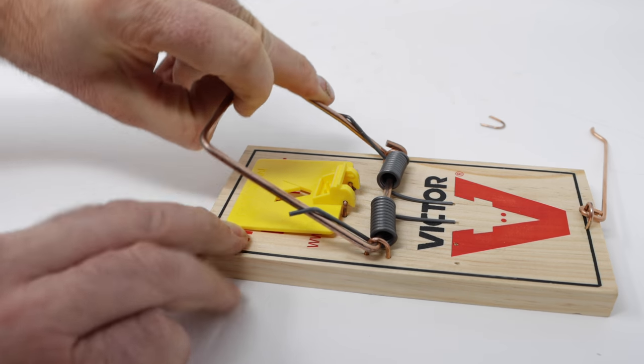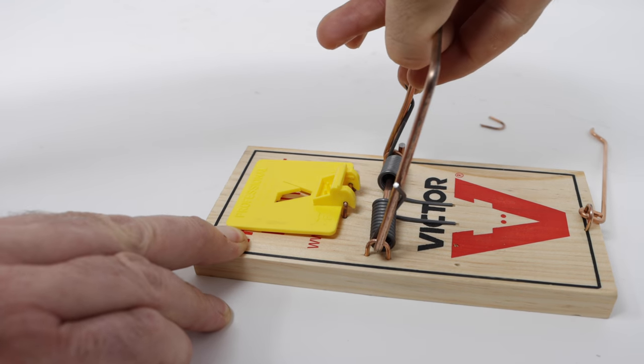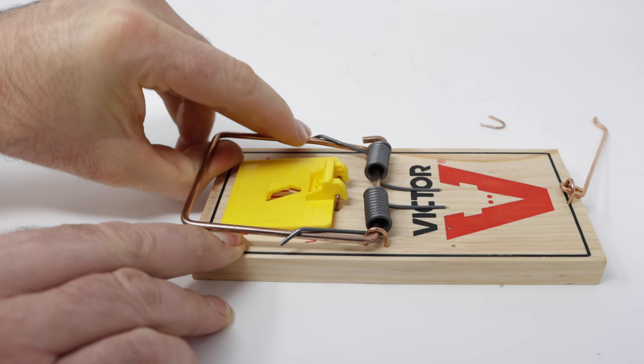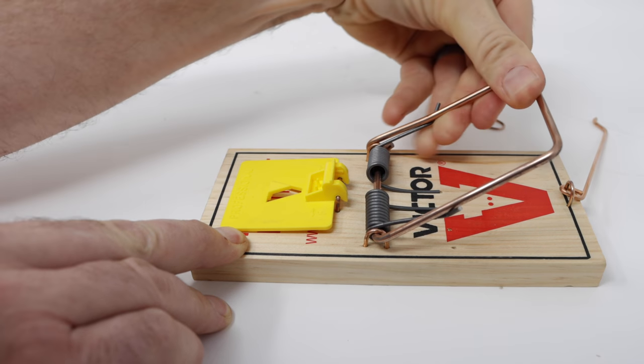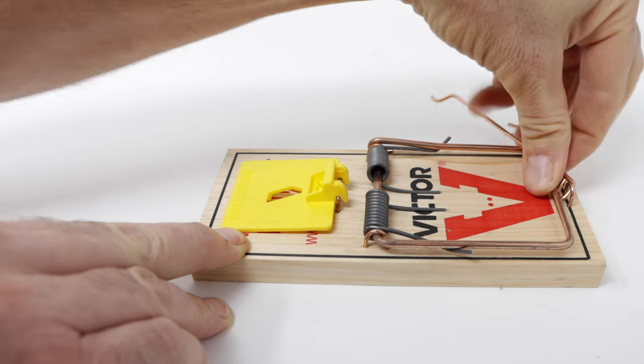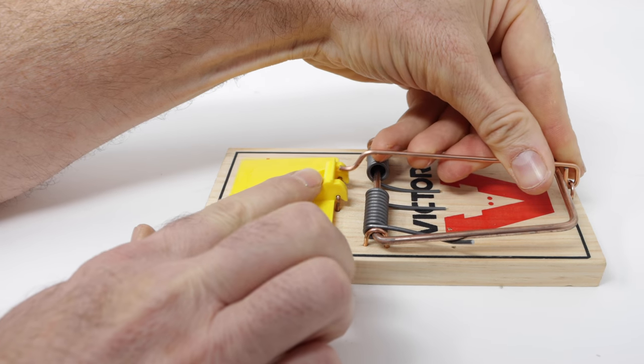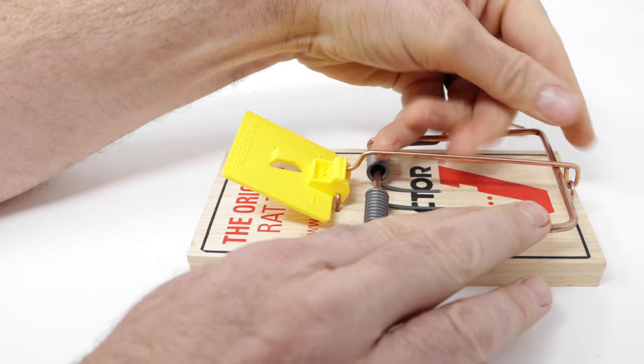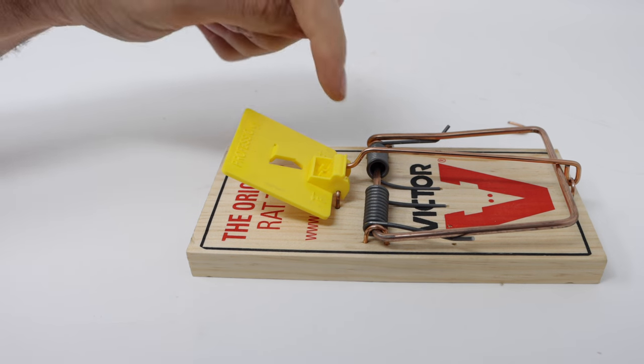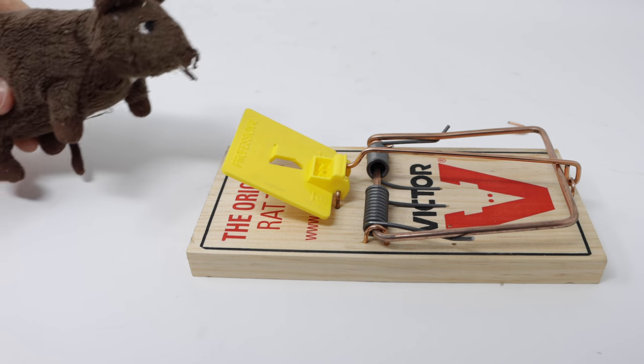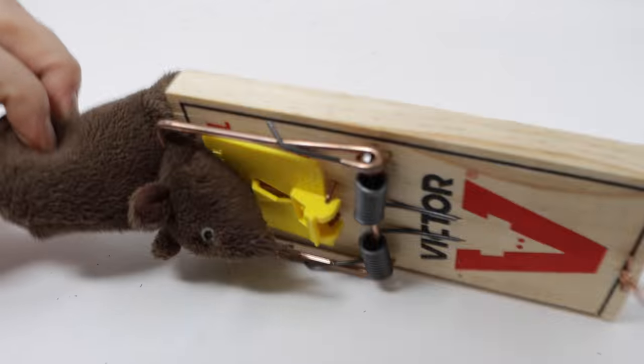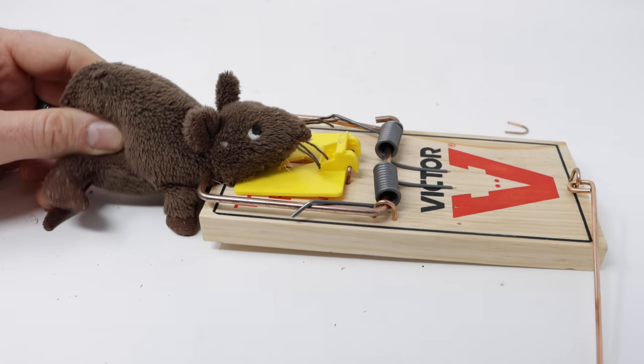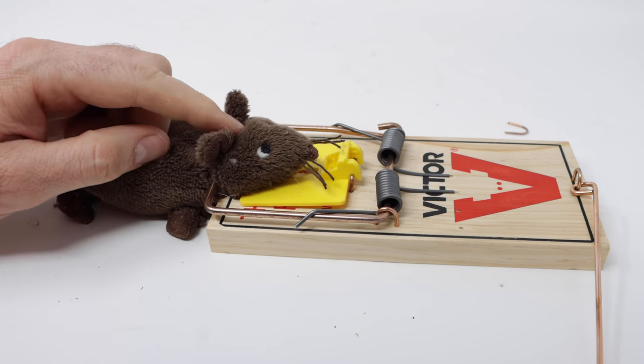This thing has so much power, it will instantly break the neck of any rat when it comes down on its neck. To set it, we pull this back carefully, pull over the setting bar, and hook it in the trigger. You place the bait right there. When a rat comes along and tries to get the bait, it gets it right on the neck and it dies very quickly. A very efficient trap with a long history.